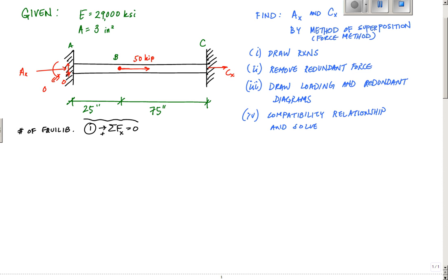I only have one equilibrium equation and that's sum of the forces in the horizontal or in the X in this case. We'll call X positive to the right. This is the only equilibrium equation I have. Number of equilibrium equations. But the number of unknowns are two. Two unknowns. I have two unknowns, one equilibrium equation. This means I am statically indeterminate to the first degree.